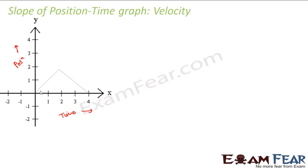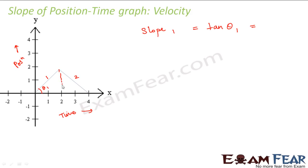In this case, how do we calculate velocity? We have two straight lines — line 1 and line 2. We calculate the slope of each line separately. Slope of line 1 = tan θ₁ = perpendicular / base = 2 / 2 = 1 kilometer per hour. Now for line 2, the slope = tan θ₂, but since the angle is in the opposite direction, it comes out to be −tan θ₂ = −2 / 2 = −1 kilometer per hour.